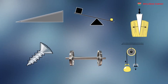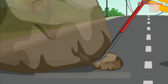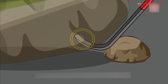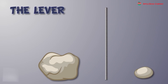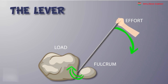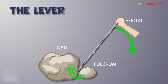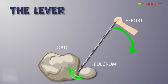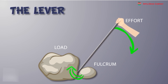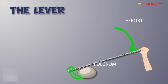Levers. At the construction site, workers use a lever to lift heavy stones. It is easier to use a lever than to manually lift the stones by hand. A lever is a rod which has three points: fulcrum, effort, and load. The fulcrum is the place on the rod where it provides support. Effort is the point where force is applied. Load is the object which needs to be moved. The closer the object is to the fulcrum, the easier it is to move.